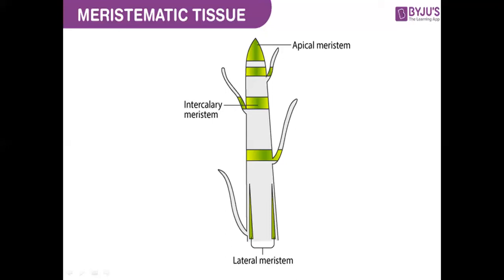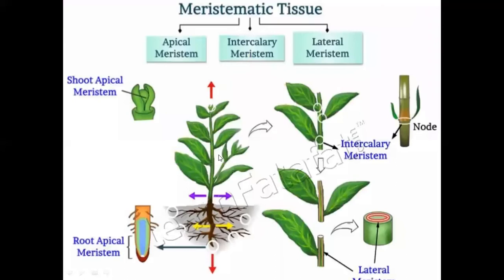Meristematic cells either have no vacuoles at all or very small vacuoles. Depending upon their occurrence and position in the plant body, meristems are divided into apical meristem, intercalary meristem, and lateral meristem. Apical meristem is located at the growing apices of main and lateral shoots. At the top of the shoot it is called shoot apical meristem, and at the root tip it is called root apical meristem. They are responsible for linear growth of an organ.